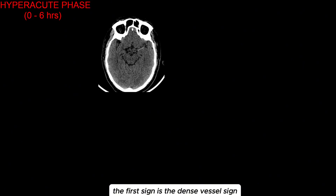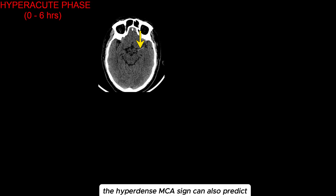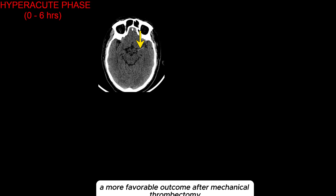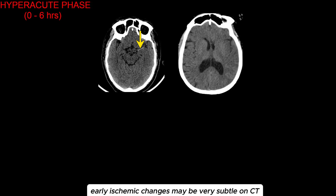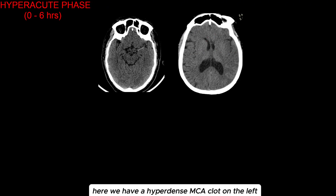The first sign is the dense vessel sign. This represents the clot itself, which usually has a higher content of erythrocytes, giving it a more hyperdense appearance on imaging. The hyperdense MCA sign can also predict a more favorable outcome after mechanical thrombectomy. Early ischemic changes may be very subtle on CT, so always use symmetry to help spot small differences. Knowing the symptoms will guide you towards the affected area. Here we have a hyperdense MCA clot on the left.